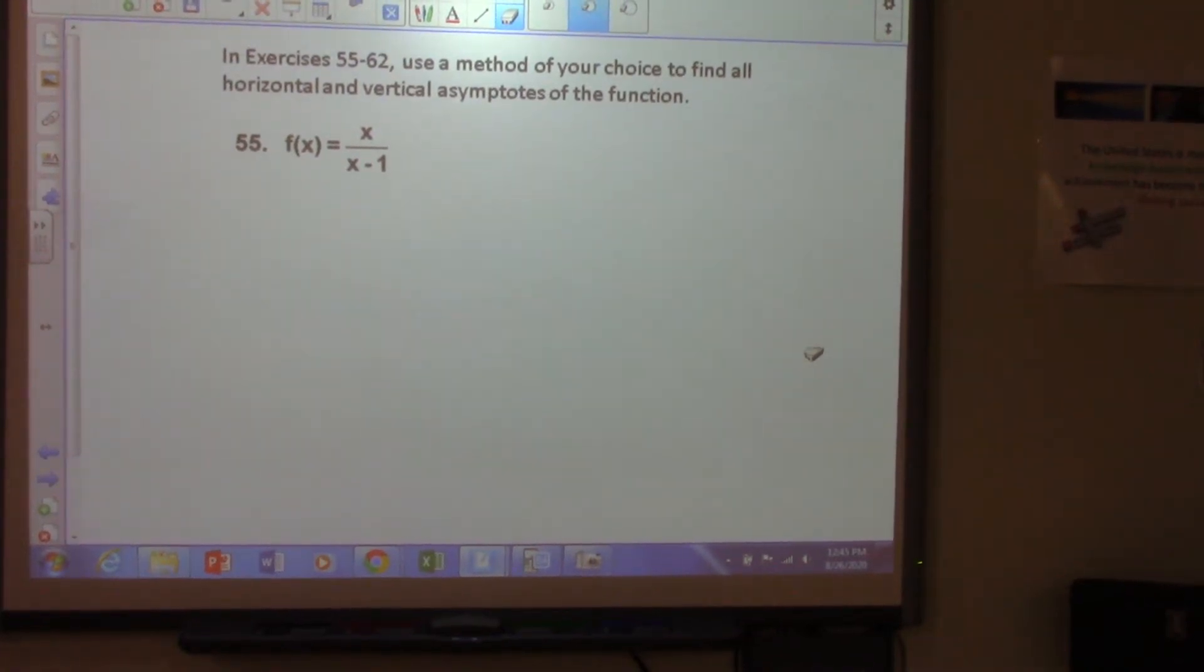Okay, we're going to go over this exercise set today, 55 through 62. We're going to find vertical and horizontal asymptotes of rational functions. Calculators could be helpful because it says use the method of your choice, and one of those is by graphing.